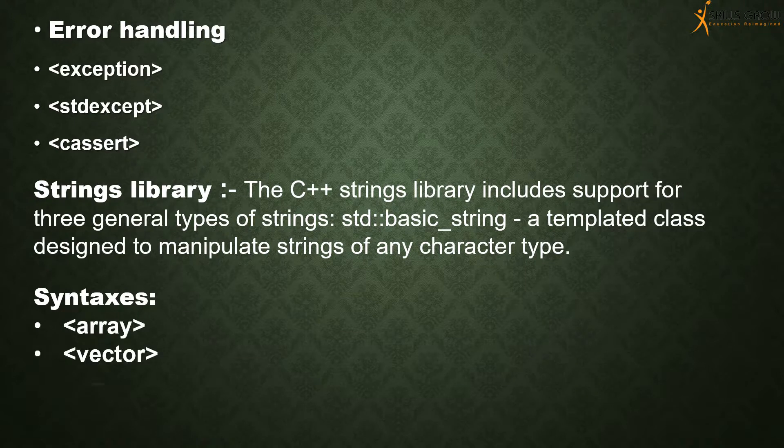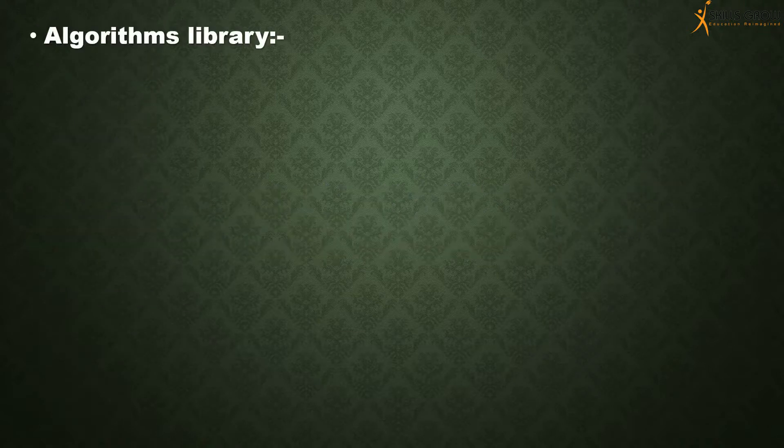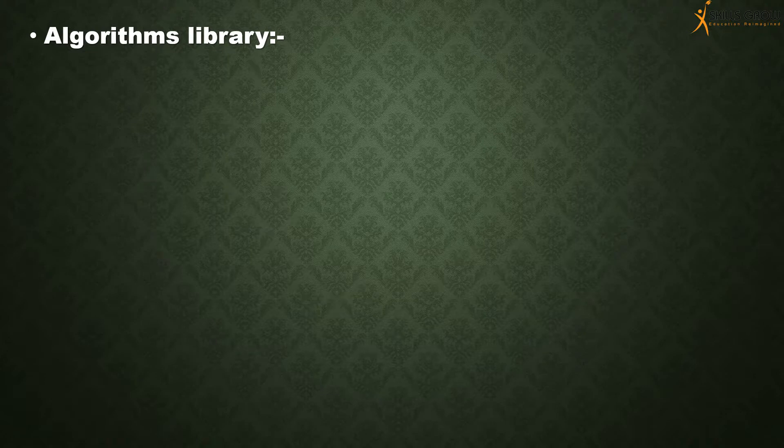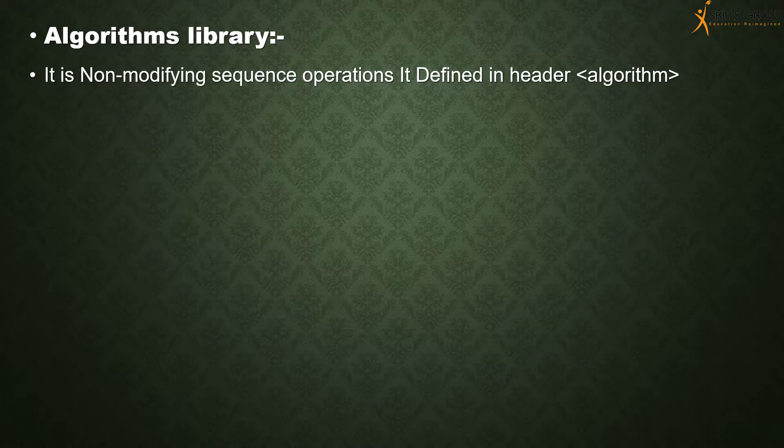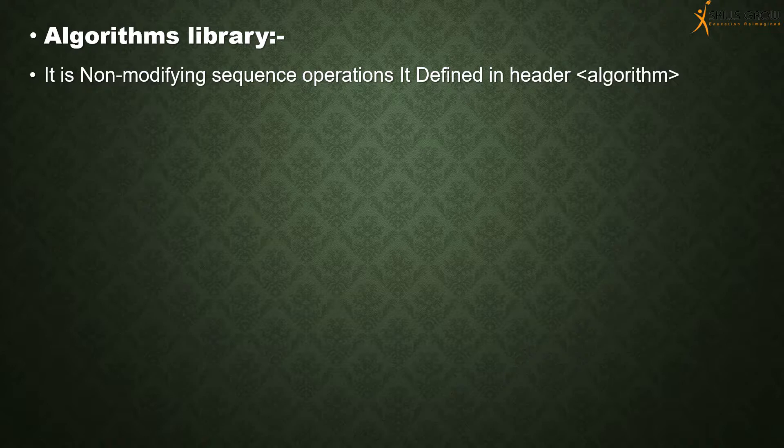The array header file, vector header file, and also the list header file. Algorithm library. It is non-modifying sequence of operations. It is defined in header file named algorithm.